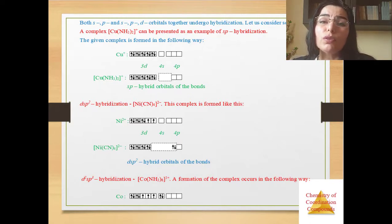A shortcoming of the method of valence bonds: in some cases the number of orbitals needed for placement of the electrons is less than a number of forming bonds, and also the present method doesn't explain the optical properties of complex compounds. Both S, P and d orbitals together undergo hybridization. Let's consider several examples.